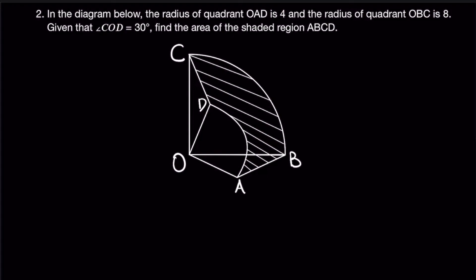Let's look at question 2. In the diagram below, the radius of quadrant OAD is 4 and the radius of quadrant OBC is 8. Given that the angle COD equals 30 degrees, find the area of the shaded region ABCD.